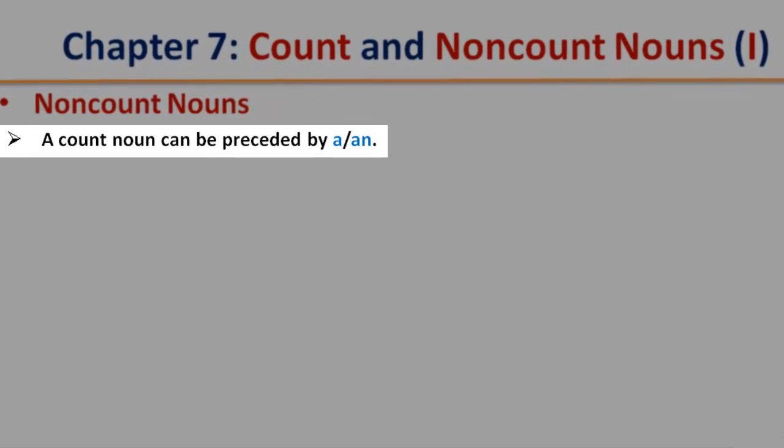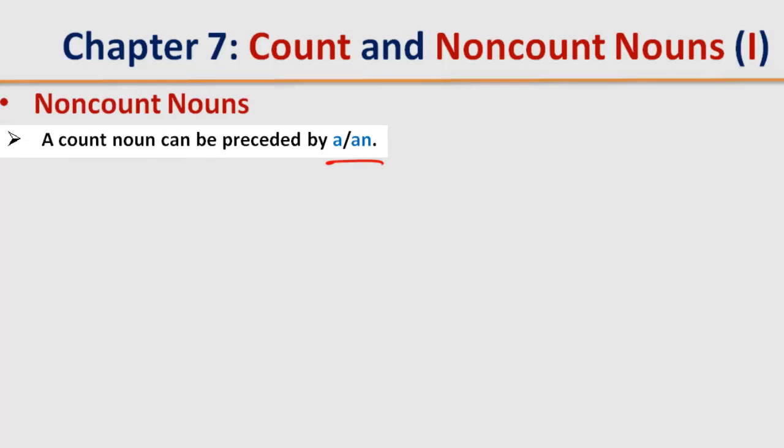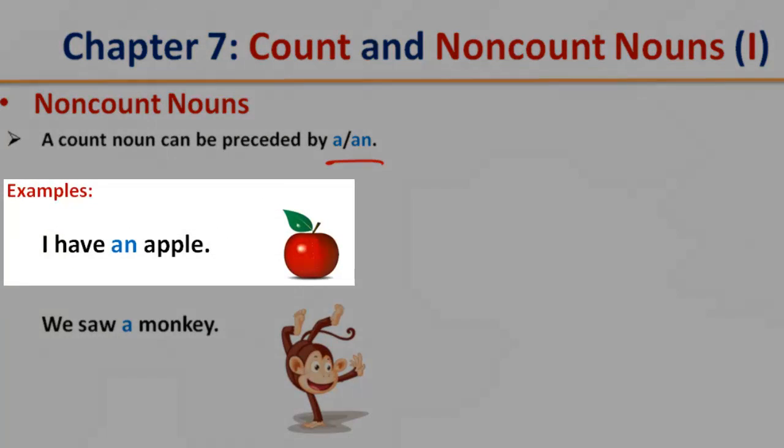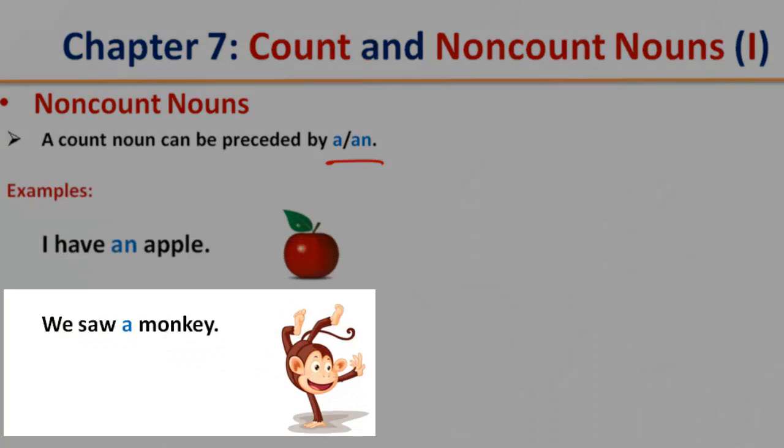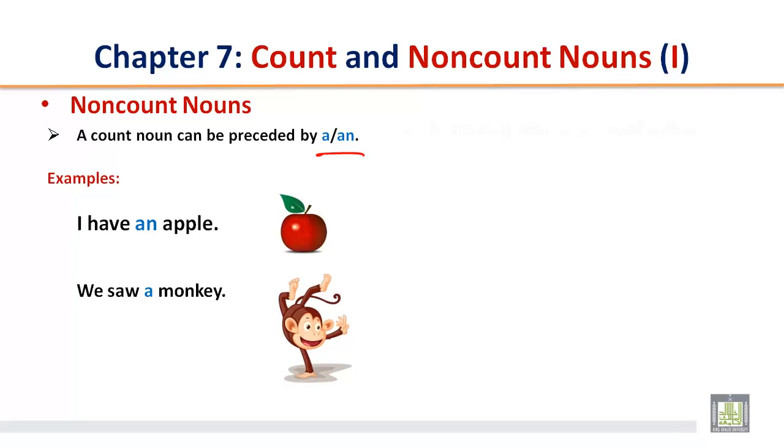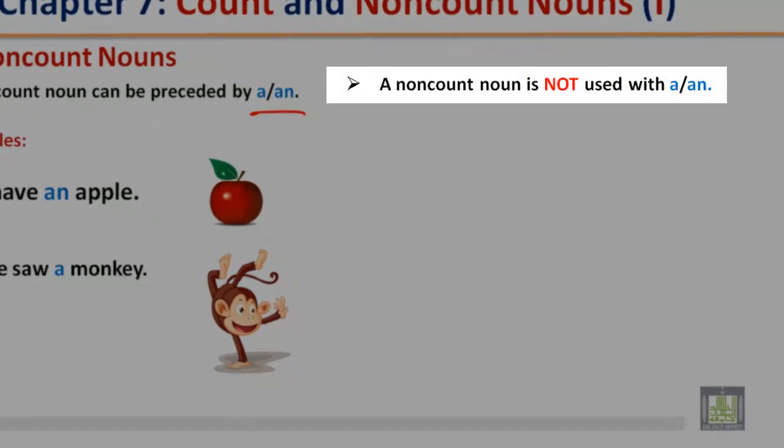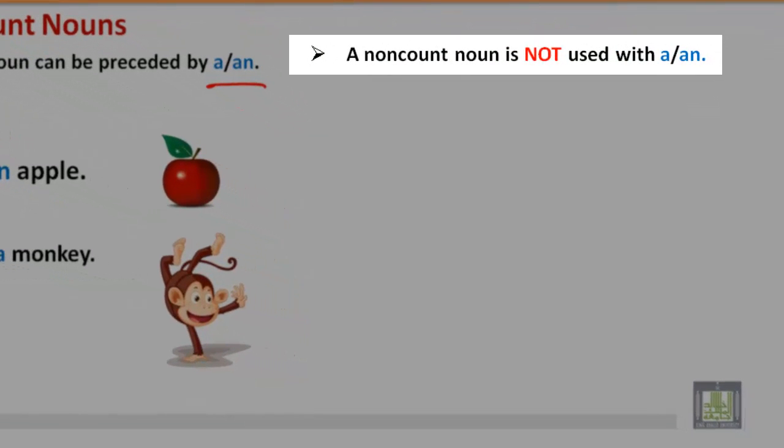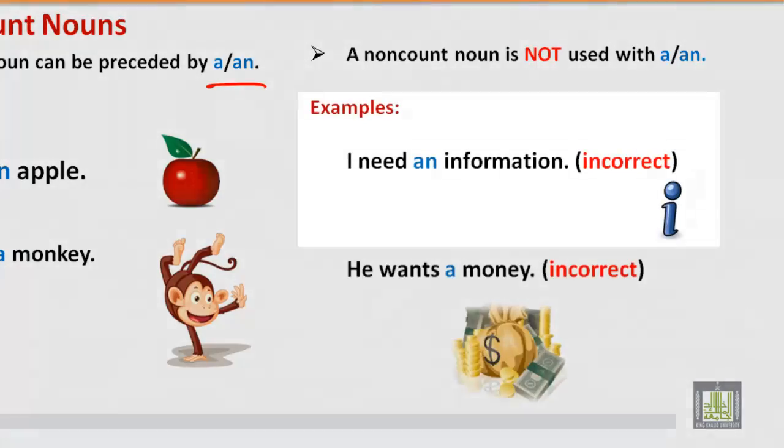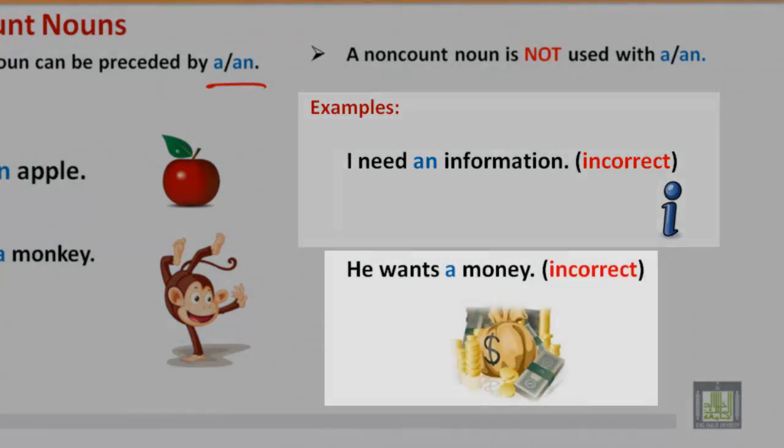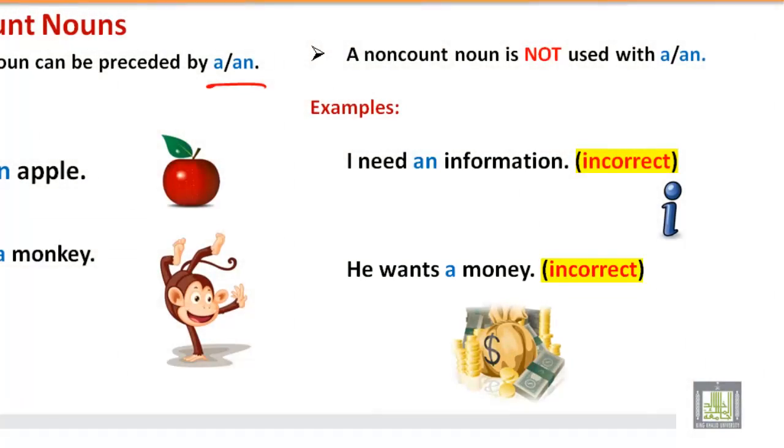A count noun can be preceded by a or an. Remember, a count noun can be counted with numbers. A non-count noun is not used with a or an. Remember, a non-count noun cannot be counted with numbers. I need an information. He wants a money. Both are incorrect.